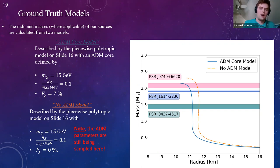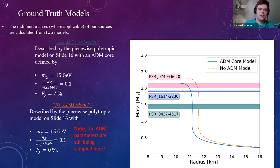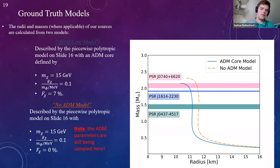The blue line is the ADM core model mass-radius curve and the orange dash-dotted line is the no-ADM model. I also show the mass posteriors of J0740 and the three sources used for the future case.